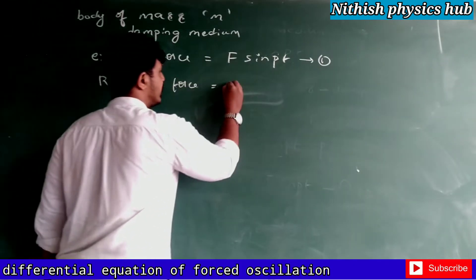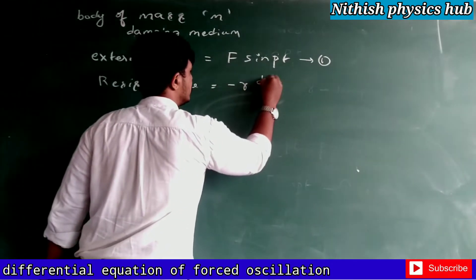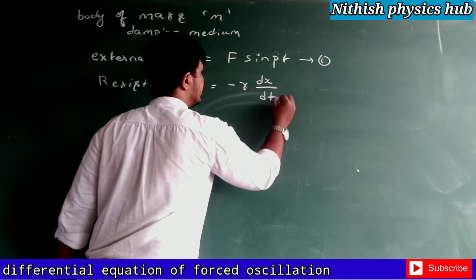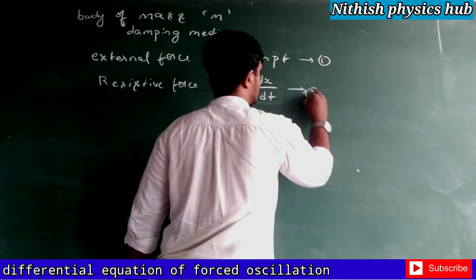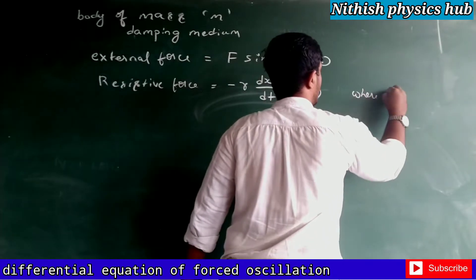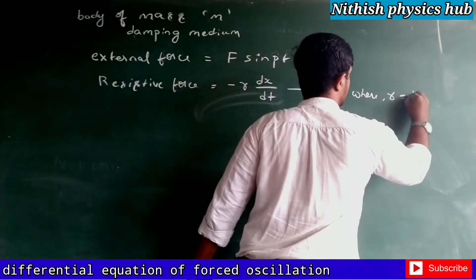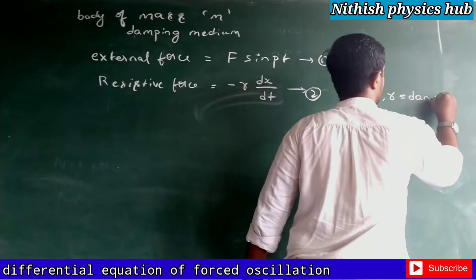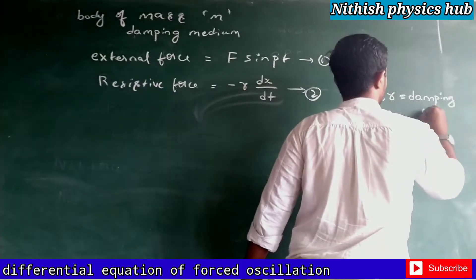Now the resistive force is given by negative of r into dx by dt. Take it as equation number 2, where r is equal to damping force.